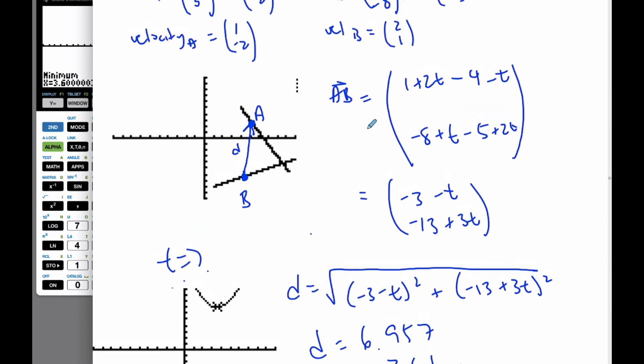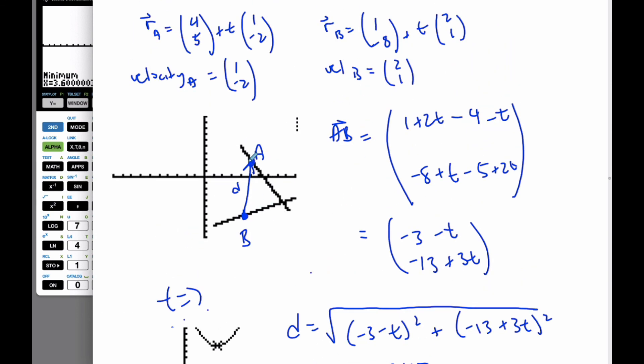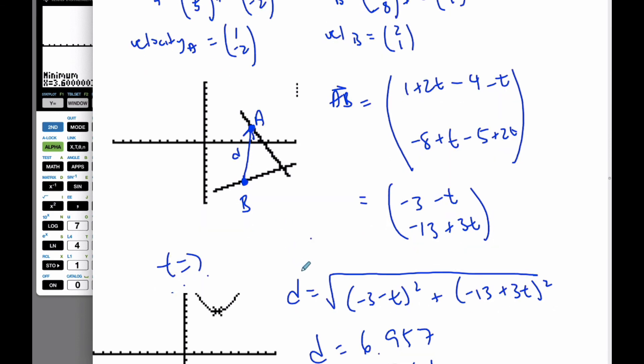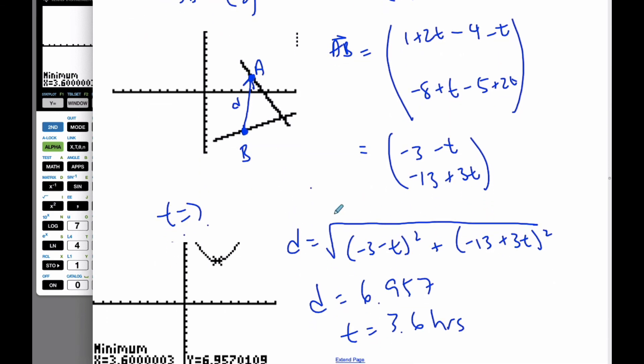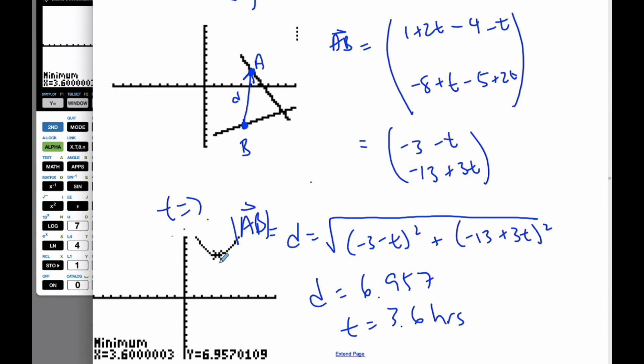So we find the general vector AB between the two boats at any given time. We find the distance between it, or the magnitude of the vector, the magnitude of AB. And then we find the minimum, and we can graph that.